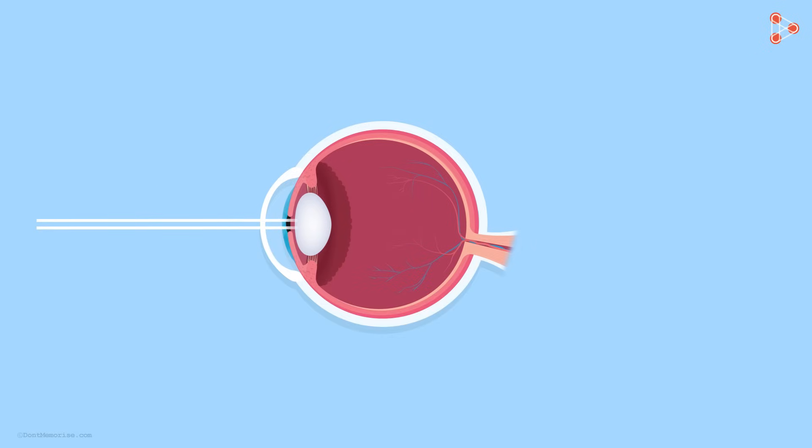The light that enters through the pupil falls on the lens kept behind. The lens is a convex lens. Convex lens is a lens which is thicker at the centre than the edges. It's a converging lens, that is, it focuses all the light at one point.